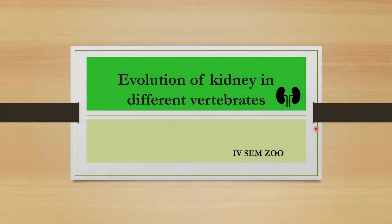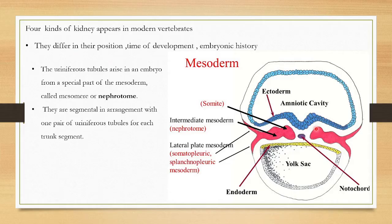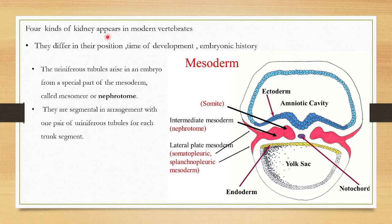Evolution of kidney in different vertebrates. There are four kinds of kidney that appear in modern vertebrates, and all differ in their position, time of development, and embryonic history.